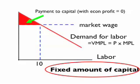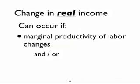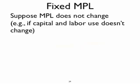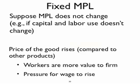Now we want to analyze how these incomes — these factor payments — change if something alters in the economic environment. We're going to use a change in the price as the factor that changes. The only way incomes can change is if the marginal productivity of labor or capital changes, or the price of the product changes. Keeping the marginal productivity of labor and capital fixed, two things are immediate if the price changes: each worker is more valuable to the firm, and there is pressure for the wage to rise, especially in a competitive labor market.